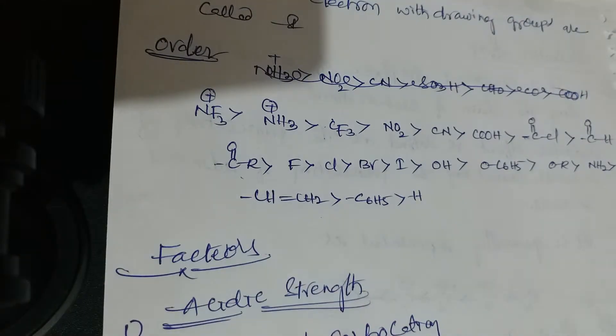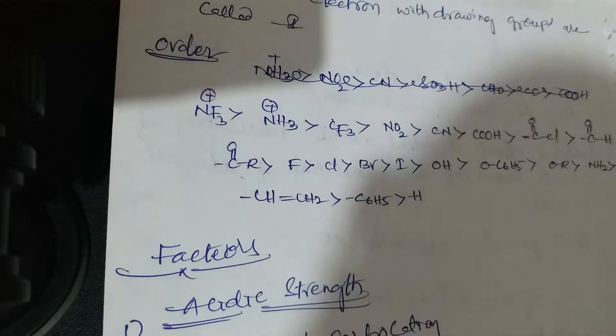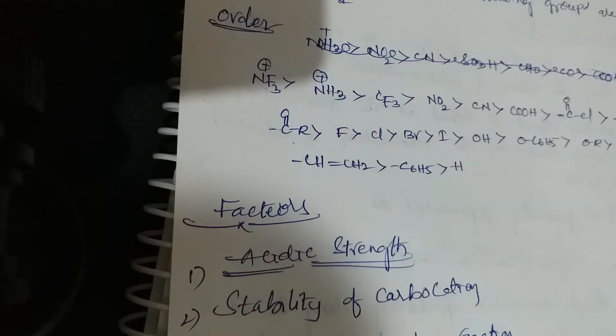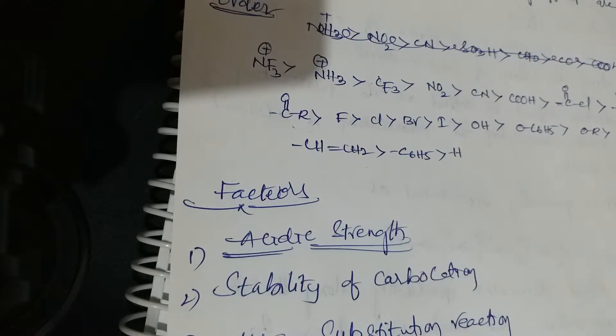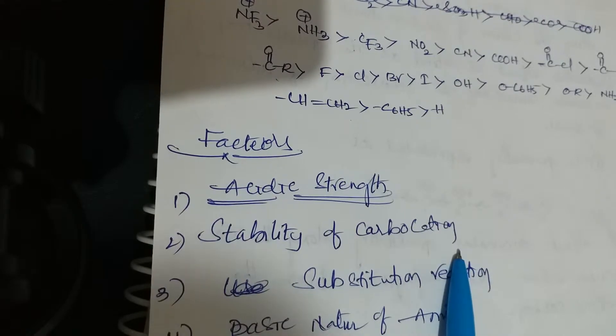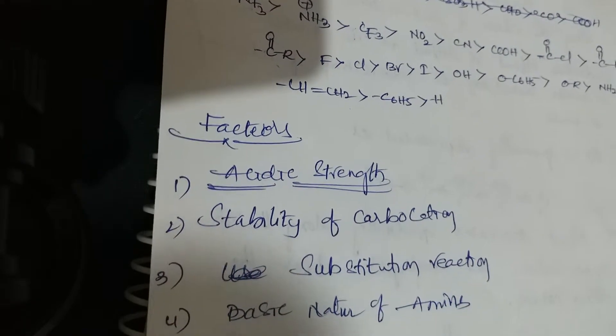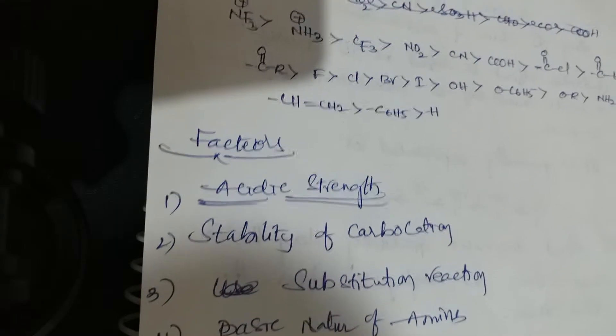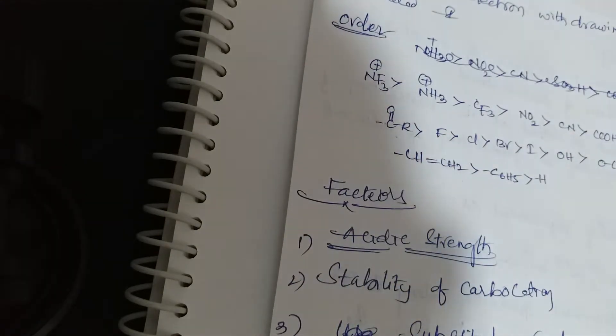These are the main -I effect groups — very important for exams, especially NO₂, cyanide, and carboxylic acid. Now, what are the factors of inductive effect? The first factor is acidic strength or acidic order, the second is stability of carbocation, then substitution reactions, and the basic nature of amines.